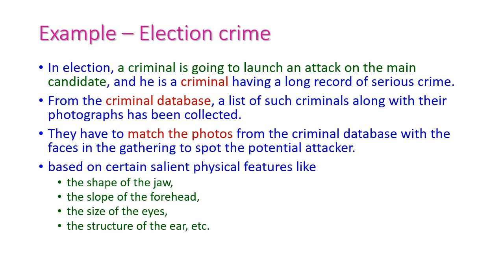Now, let us see one example that is election crime example. In election, a criminal is going to launch an attack on the main candidate. That is, in an election, a criminal will plan to attack the main candidate and he has a long record of serious crime. And what the police will do? They are maintaining the criminal database. The database contains a list of collected photographs of criminals, already existing criminals. Now, they have to map this particular criminal with the existing database, with the features.